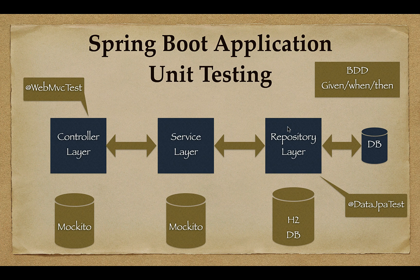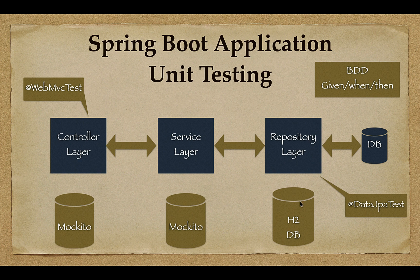We begin with unit testing repository layer components. We will learn how to unit test CRUD methods, native queries, JPQL queries, and custom queries. We're going to use the @DataJpaTest annotation to test repository layer components, because this annotation automatically configures an in-memory database for testing. We don't need to use Mockito here — we'll use the in-memory database to store and retrieve data.